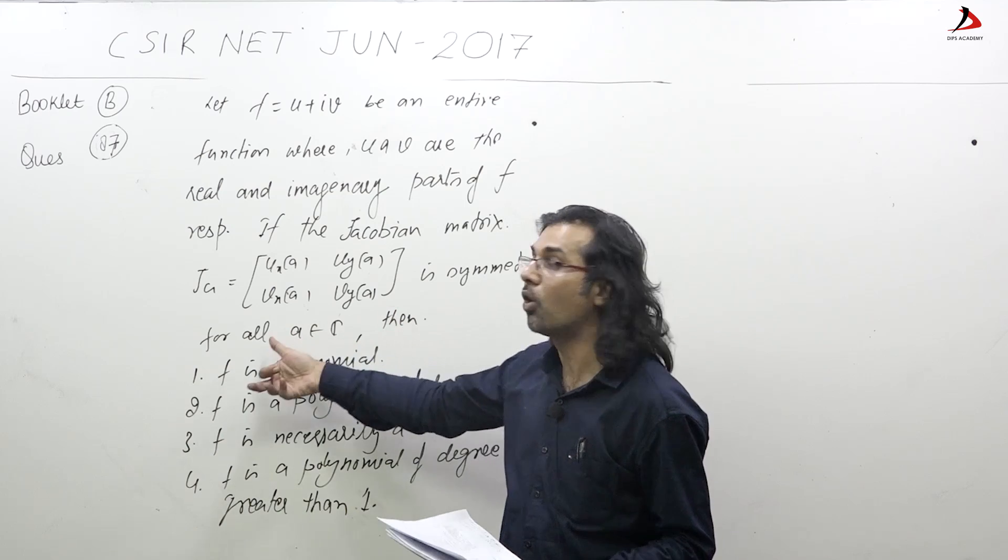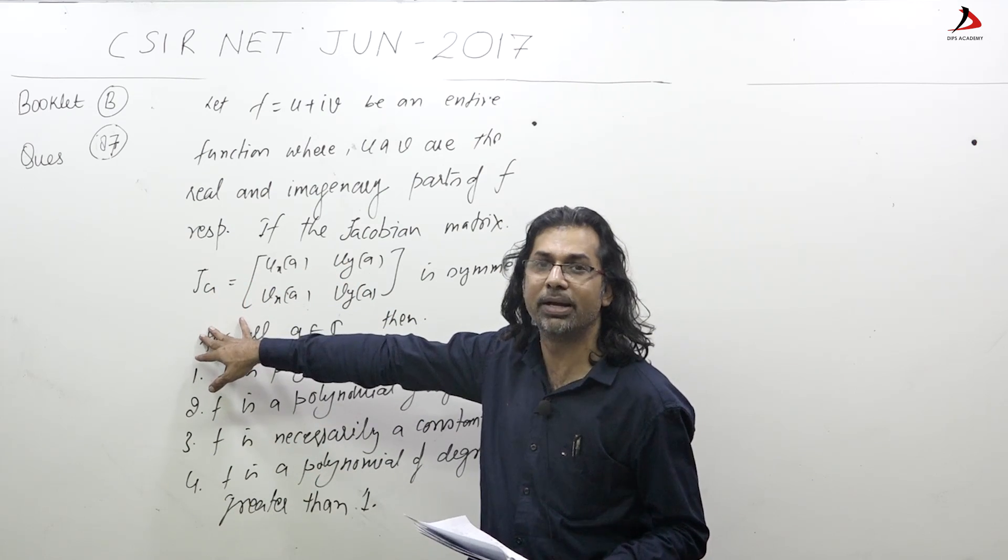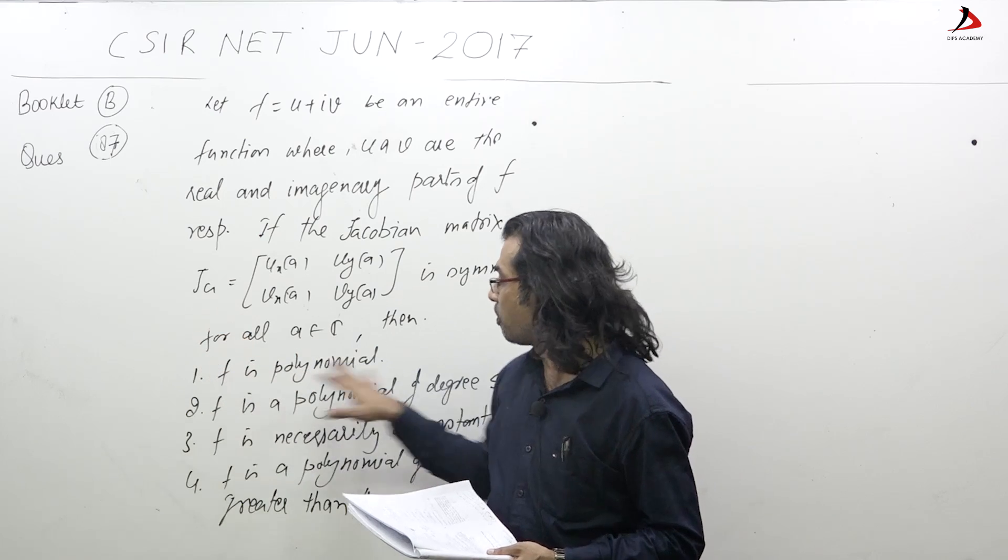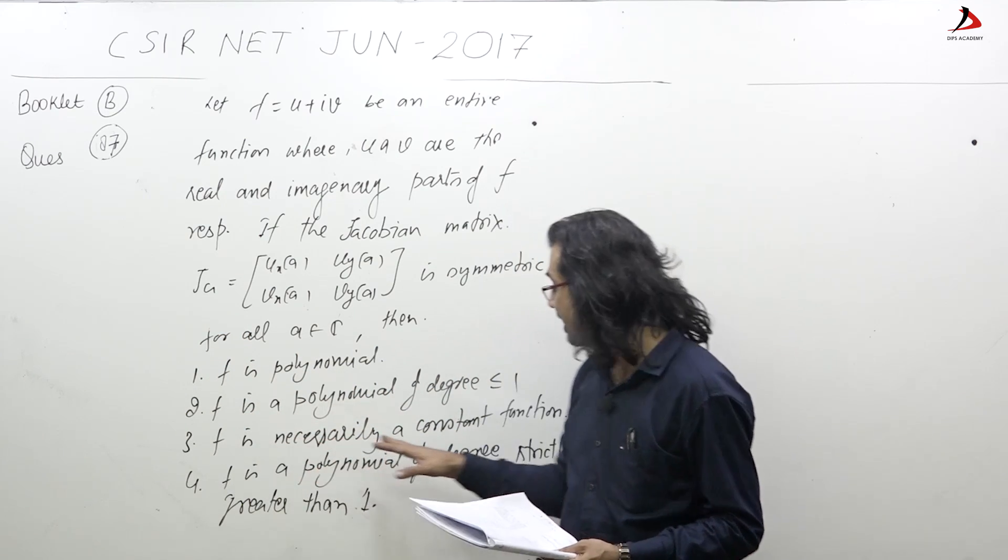If the Jacobian matrix J_a is symmetric for all a belonging to C, then the options we have to anticipate are: what can be f? F is polynomial, f is a polynomial of degree less or equal to 1, f is necessarily a constant function, or f is a polynomial of degree strictly greater than 1.